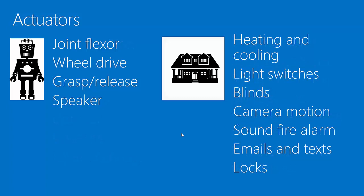Actuators are ways to move things or take actions. In traditional robots, these include joint flexors, drives that spin wheels, grippers that grasp and release things, or speakers and monitors for showing visual displays or playing sound to interact with a human. Similarly, in a house there are other types of actions: heaters and coolers can be switched on and off, light switches can be switched, blinds can be opened and closed or raised and lowered, cameras can pan and tilt and zoom, fire alarms can be turned on, emails and texts can be sent, and locks can be locked and unlocked.